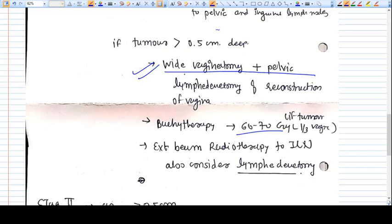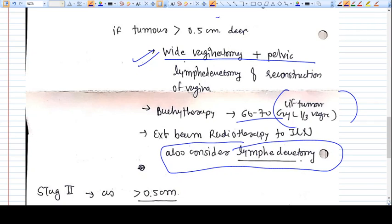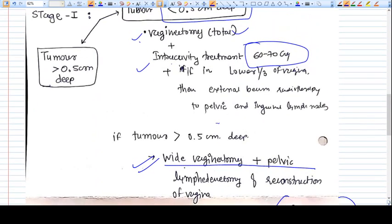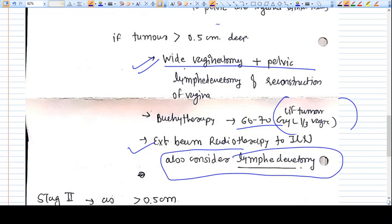If the tumor is in lower one-third vagina, you must consider lymphadenectomy of inguinal lymph nodes followed by external beam radiotherapy. There's a difference here - in less than 0.5 centimeter deep, we were doing just vaginectomy and radiotherapy. Here we're doing pelvic lymphadenectomy, also considering inguinal lymph nodes to be removed.